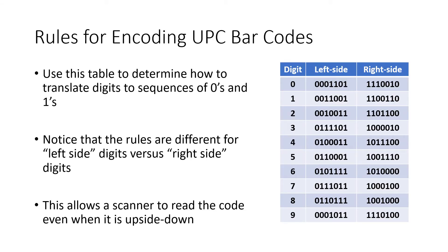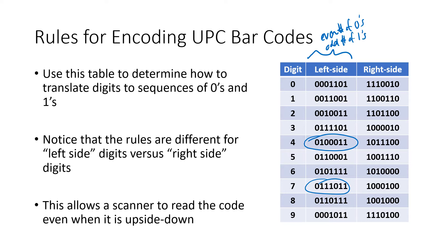Here is how we represent each digit in a UPC barcode. Notice that there are different patterns for the left-hand side of the code versus the right-hand side. All of the left-side digits have an odd number of ones and an even number of zeros. For example, digit four has three ones and four zeros, and digit seven has five ones and two zeros. On the right-hand side, all digits have an even number of ones and an odd number of zeros — for example, four ones and three zeros, or two ones and five zeros.